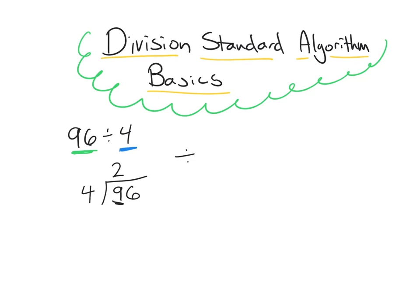The next step is going to seem kind of silly — we're going to multiply. We're going to multiply this 2 times our divisor 4, and this tells us how many of the tens we were able to put into groups. So 2 times 4 is 8. Now the next step is we are going to subtract. We're going to subtract the 8 we were able to put into groups from the 9 tens we had. So 9 minus 8 is 1.